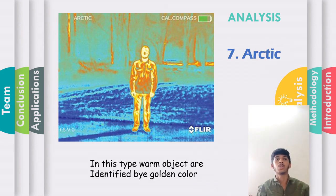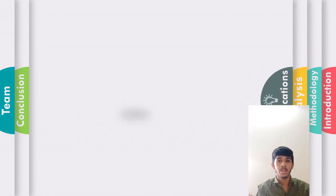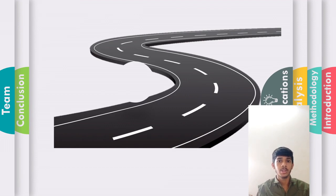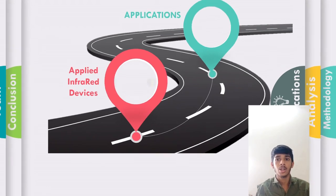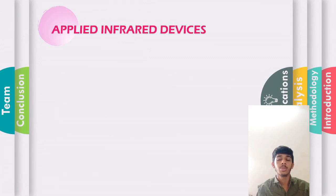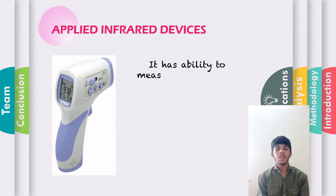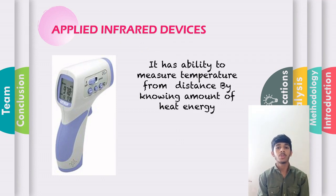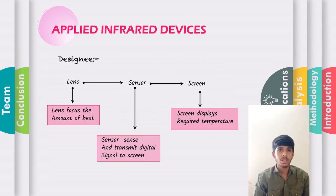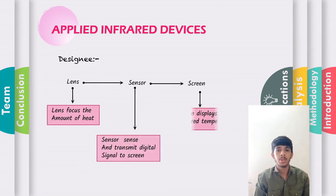Good morning, myself Abhishek Desai. My topic is applications of thermal cameras. The first is biological applications: this includes the study of behavior and detection of many species, detecting camouflaged creatures in poor visibility, studying types of infestation, and behavioral studies that would otherwise be impossible — for example, study of marine species. Applied infrared devices have the ability to measure temperature from a distance. They consist of a lens, sensor, and screen: the lens focuses heat, the sensor transmits the digital signal, and the screen displays the required temperature.